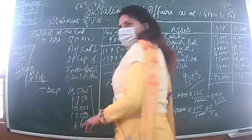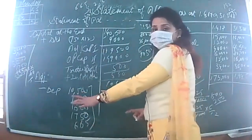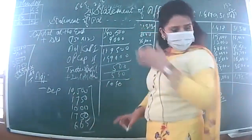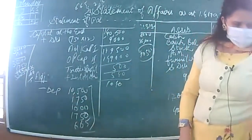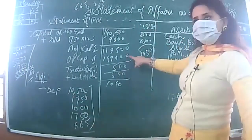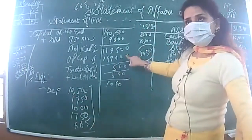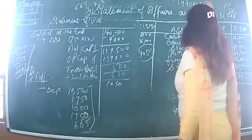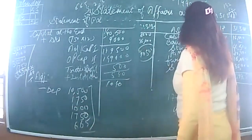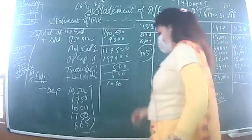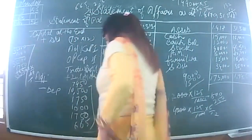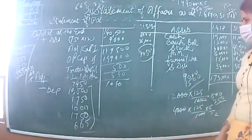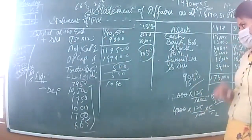Now we add up all the adjustments. The total of negative adjustments is more than the profit of 1,040. One more adjustment remains: interest on capital. Interest on capital is always calculated on opening capital. Opening capital is 1,49,000. 1,49,000 × 5% = 7,450. Less interest on capital: 7,450.